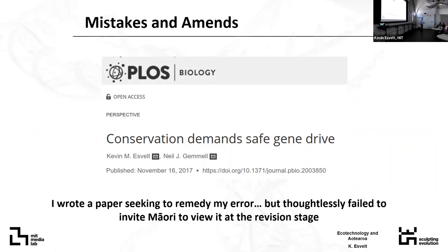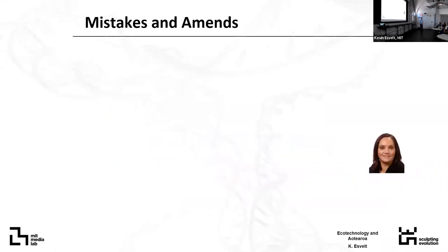New Zealand has the tightest biocontrol at its borders in the world, and New Zealand farmers still smuggled in rabbit calicivirus from Australia illegally because they wanted to control the rabbits — I should assume the same thing will happen here. So I wrote a paper seeking to remedy my error with a New Zealand co-author, and this was before I first met our Maori partners. At the revision stage, after I had met them, I just didn't think to ask them what they thought about the language. That paper resulted in a bit of a firestorm in New Zealand because it effectively said: you can't use the full-power gene drive, and here's what would happen if Aotearoa tried — it would jeopardize efforts against malaria. Many people took umbrage, and it ignited a local political firestorm.